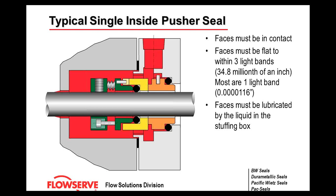What exactly does flatness mean? Picture yourself standing on a large concrete floor with a laser level. Someone in the distance takes measurements and you notice differences in elevation of one, two, three, or four inches — those are the valleys and peaks on that floor. If you were to shrink yourself down and do the same on a mechanical seal face, those differences in elevation could be no more than 34.8 millionths of an inch. That is what's meant by flatness.